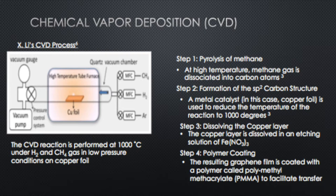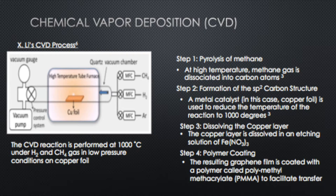Step one of this method is heating up the system to initiate the pyrolysis of methane. At high temperatures coupled with hydrogen, methane gas can be dissociated into carbon atoms, and those hydrogens can couple with the hydrogen gas also present in the system. Step two is forming the sp2 carbon structure that is graphene. They use a copper foil metal catalyst to reduce the reaction temperature to around 1000 degrees. It's important to use copper, as other metals have shown to produce graphene with inconsistent properties.